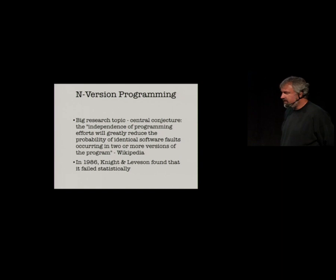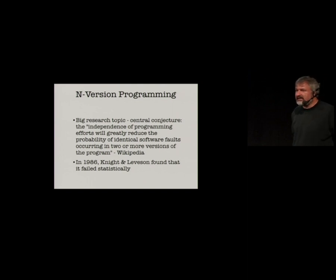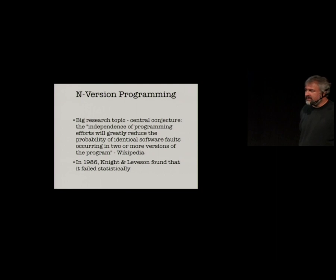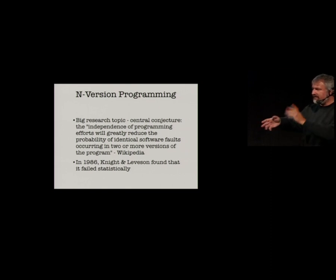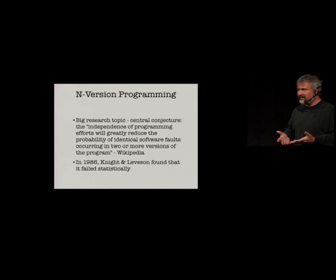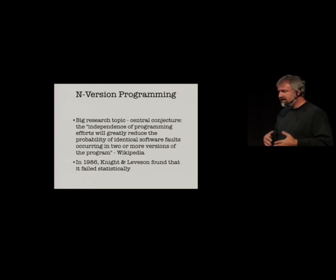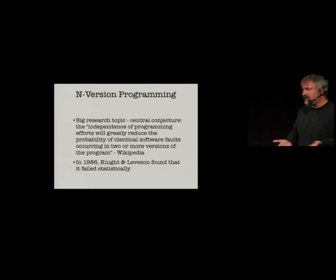It's a rather neat idea — doesn't it make sense that if you give the same spec to different groups, one group might make a mistake but the other won't? Well, it turns out this had a hole blown in it in a paper in 1986 by Knight and Levison. They basically found through experimentation that if you give the same spec to a bunch of different teams and have them work independently, you still have statistical correlation of the defects — teams will statistically make the same errors. You still get some benefit out of this, but it is not as perfect as people thought. We just don't get anywhere with redundancy in software development — we have to build things correctly.